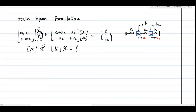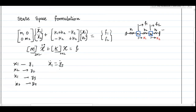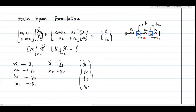The equation is expressed in terms of the 2×2 mass matrix and stiffness matrix. I define state variables Y1, Y2, Y3, Y4 corresponding to X1, X2, X1-dot, and X2-dot. Rearranging, X1-double-dot equals Y3-dot and X2-double-dot equals Y4-dot. Finally the equation becomes Y1-dot, Y2-dot, Y3-dot, Y4-dot — converting the second-order equation into first-order form using state space formulation.